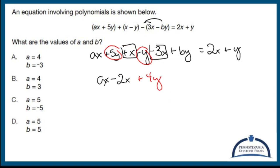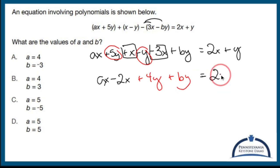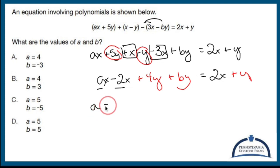We've got 5y minus regular y, which is 4y, plus By. That's got to equal 2x — which I'll keep in black so it looks like my x values — plus a regular y, which I will keep red. A minus 2x has got to match up with 2, so A minus 2 has got to equal 2.